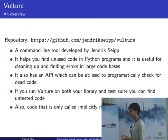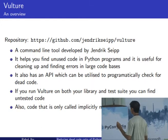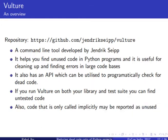Now let us talk about Vulture — what is it and how do we use it? Vulture is a command line tool developed by Jendrik Seipp. I did my Google Summer of Code project with it. What Vulture does is it finds cases of unused code in Python programs. It also has an API for programmatically checking for dead code. Since Python is a very dynamic language, Vulture can often give false positives. For example, a constructor function isn't being explicitly called somewhere, so Vulture can report it as dead code. We already have a standard whitelist which whitelists constructor functions and other constructs.